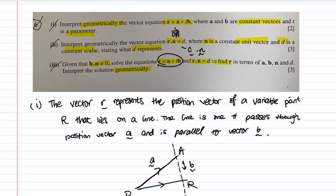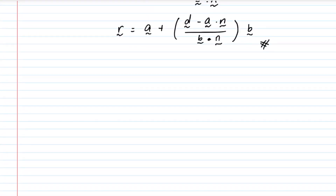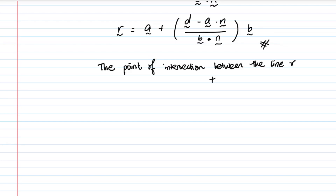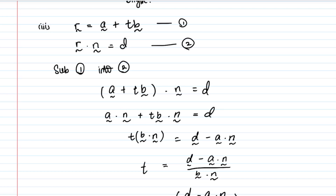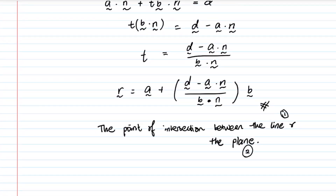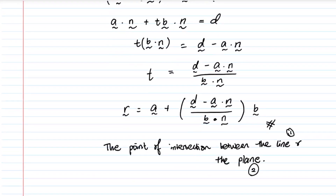For the geometric interpretation: since we are solving the line equation simultaneously with the plane equation, the solution r represents the point of intersection between the line and the plane — where equation 1 is the line and equation 2 is the plane. This is a very straightforward simultaneous equations problem. The question is really testing your ability to interpret vectors geometrically and solve simple simultaneous equations.